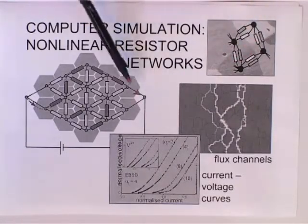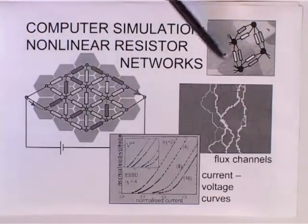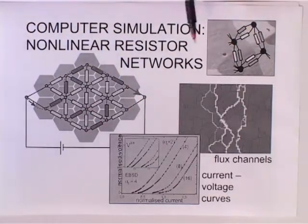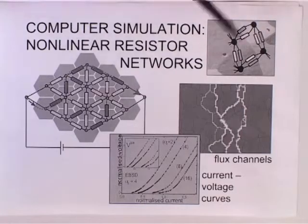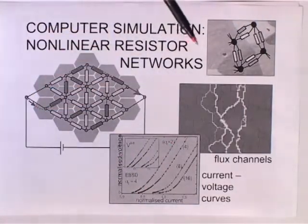Then you get a large network, which can either be a regular network or built by real grains, which are irregular. From this model you can calculate the IV curve of a superconductor.